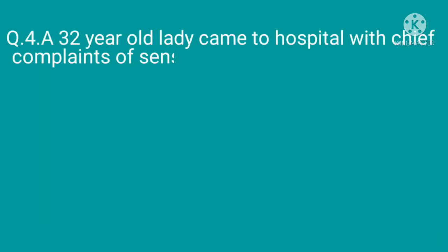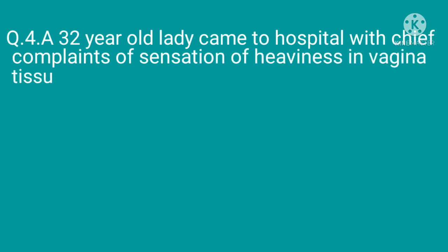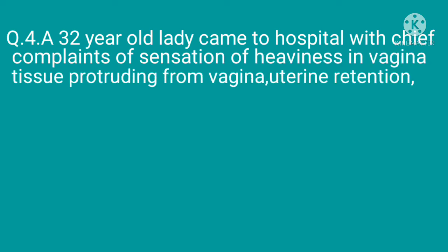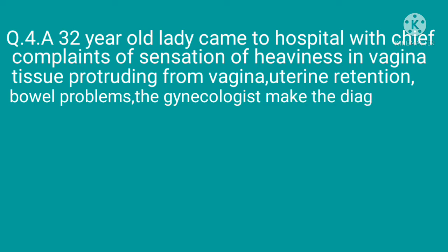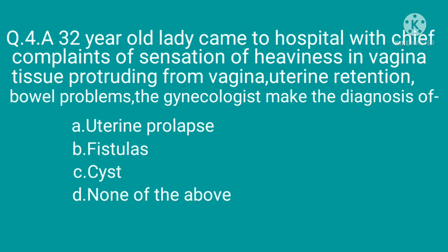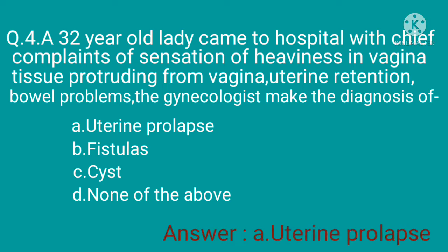Question 4: A 32-year-old lady came to the hospital with severe complaints of sensation of heaviness in the vagina, tissue protruding from the vagina, urinary retention, and bowel problems. The gynecologist makes the diagnosis of — option A: uterine prolapse, option B: fistulas, option C: cystocele, option D: none of the above. The correct option is option A, uterine prolapse.